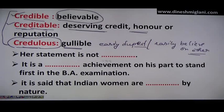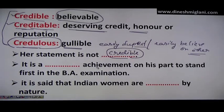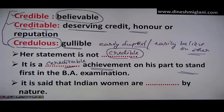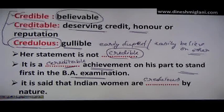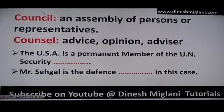'It is said that Indian women are credulous by nature' — meaning they easily believe others or can be easily duped. So to summarize: credible means believable, creditable means deserving credit or reputation, and credulous means gullible or who easily believes others. Next: 'counsel' and 'council.' Counsel (C-O-U-N-S-E-L) is advice, opinion, or an advisor — used as a noun for an advocate or lawyer. Council (C-O-U-N-C-I-L) is an assembly of persons or representatives.